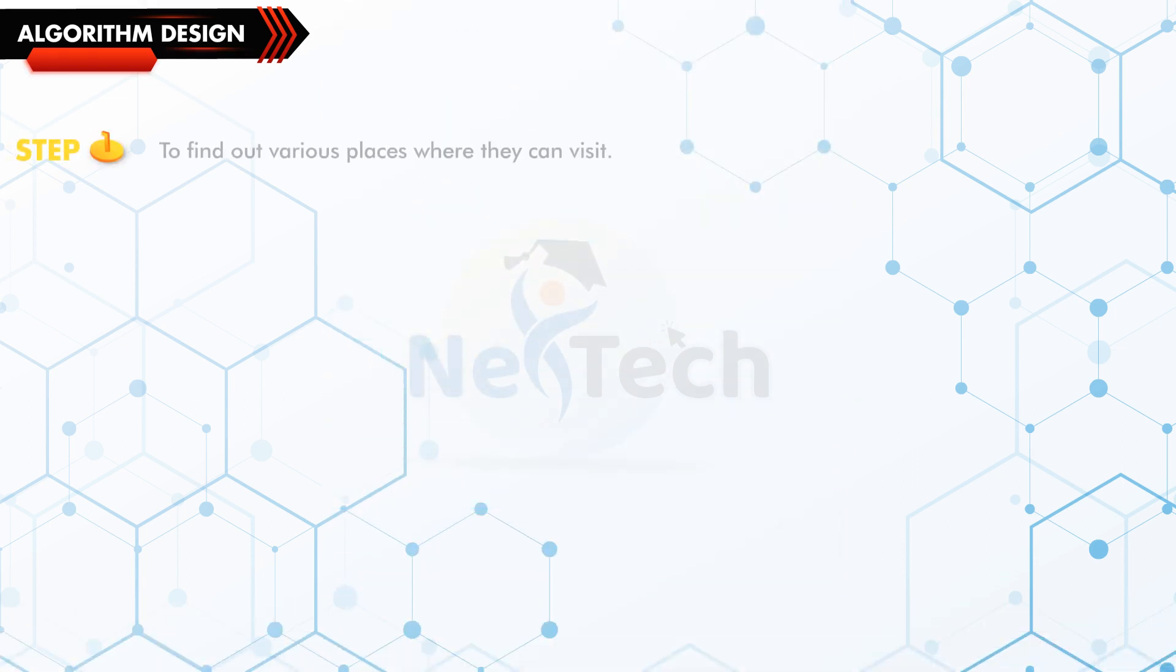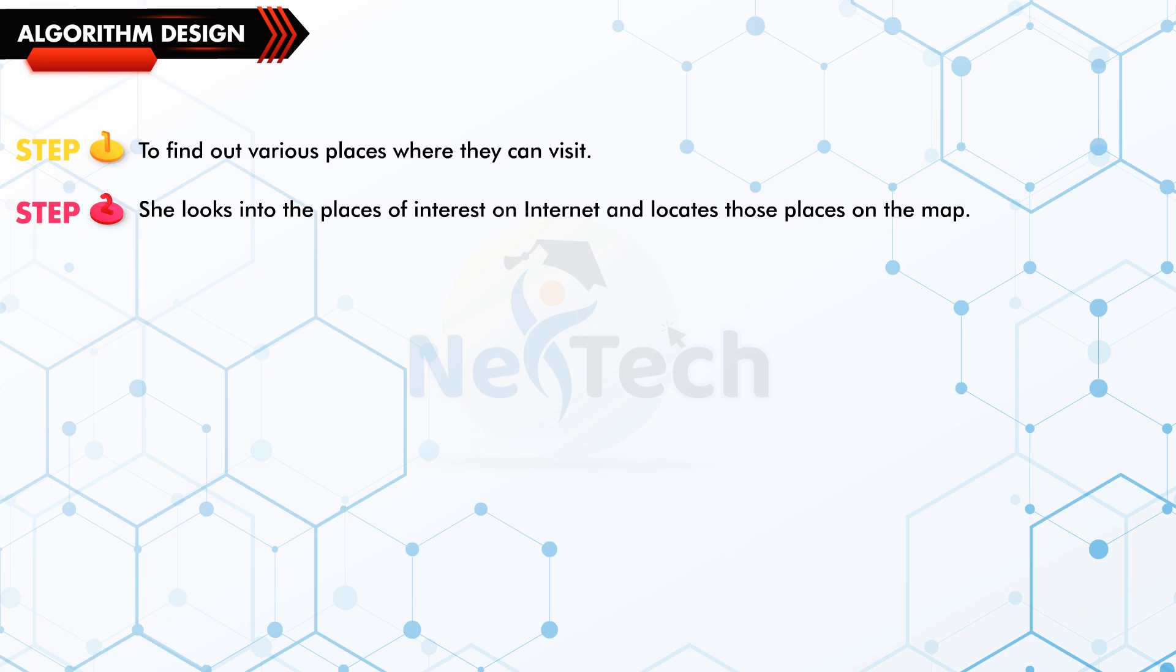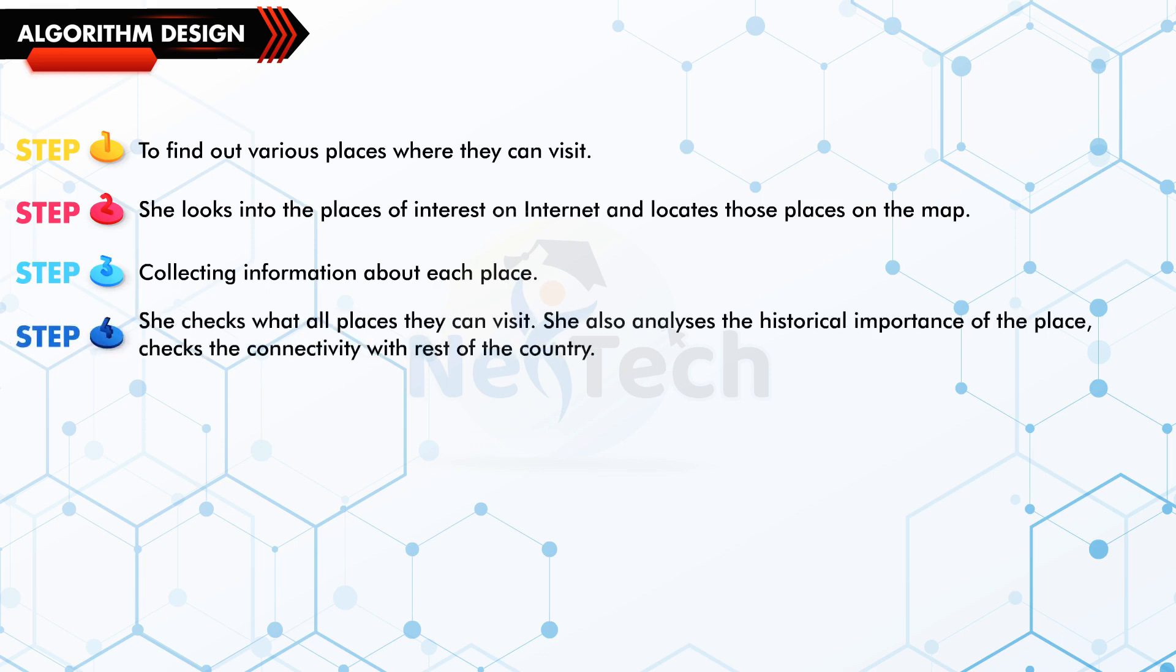Step 1: To find out various places where they can visit. Step 2: She looks into the places of interest on internet and locates those places on the map. Step 3: Collecting information about each place. Step 4: She checks what all places they can visit. She also analyses the historical importance of the place, checks the connectivity with the rest of the country.